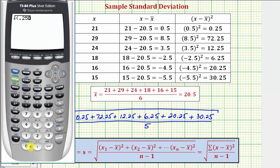0.25 plus 72.25 plus 12.25 plus 6.25 plus 20.25, plus 30.25.